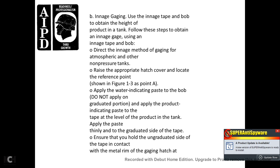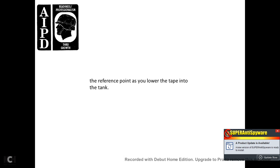29. Raise the appropriate hatch cover. 30. Locate the reference point shown in Figure 13. Apply the water indicating paste to the bob. Do not over-apply. 31. Apply the fuel indicating paste to the tape at the level of the product in the tank. Apply the paste thinly on the graduated side of the tape. Ensure that you hold the ungraduated side of the tape in contact with the metal rim of the gauging hatch at the reference point as you lower the tape into the tank.